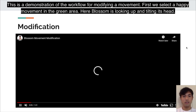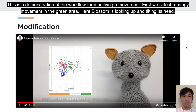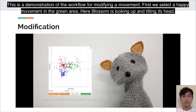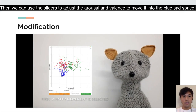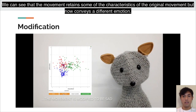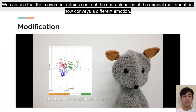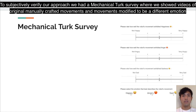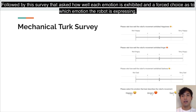Here is a demonstration of the workflow for modifying a movement. First, we select a happy movement — here Blossom is looking up and tilting its head. We then use sliders to adjust arousal and valence, moving it into the sad space. The resulting movement retains some characteristics of the original but now conveys a different emotion.